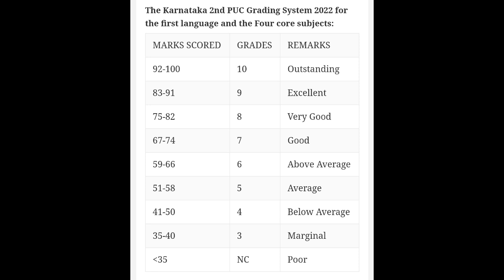Grade 1.7 is good: 59 to 66. Grade 1.6 is above average: 51 to 58. Average, above average, very good, outstanding. Below average: 35 to 40, marginal average. 35 is a poor grade.